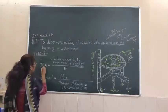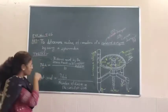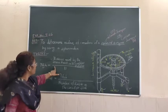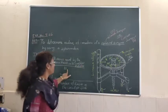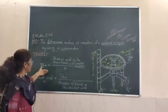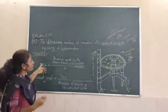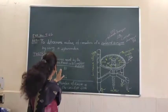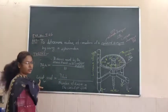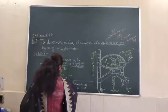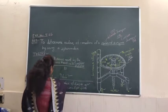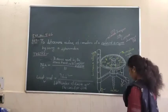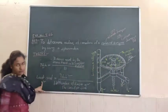Now let's look at the theory part and the working formula. For the theory part, we will see what is the pitch for this apparatus and what is the least count. Pitch is defined as the distance moved by the screw head in 10 complete rotations divided by 10. So pitch is nothing but the distance moved by the screw head in one complete rotation. Then, using the pitch we can calculate the least count, which is pitch divided by the total number of divisions in the circular scale, that is 100.